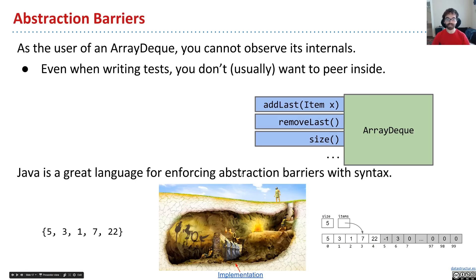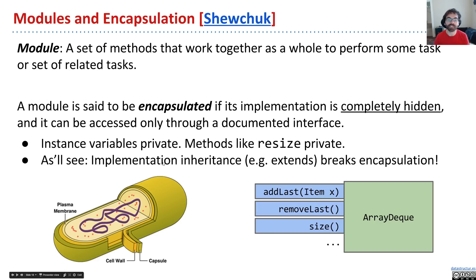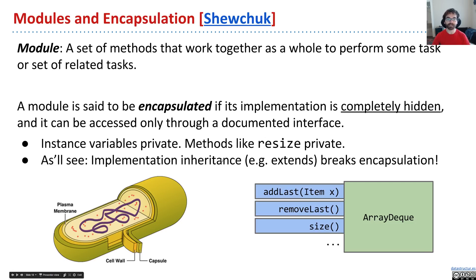When it comes to encapsulation, Java is just a great language for giving encapsulation more teeth. You can use encapsulation in a language like Python, but there it's more convention than enforced by a compiler — so it's a little more serious in Java. By making instance variables private and methods like resize private, you're in better shape. As we'll see in the next video, one thing I find very interesting is the interplay between implementation inheritance and encapsulation — and in fact, it's fundamentally broken in a way that I think is very interesting.